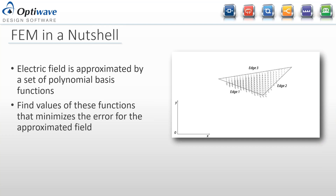Over each element, the electric field is approximated by a set of basis functions. Using vector elements, the vector field is approximated — for a first-order element — by three vector basis functions. The first basis function associated with edge one has a constant tangential part to the edge and goes to zero at the opposite corner. You then formulate the problem by including all elements into a matrix equation that minimizes the error of these approximating functions.